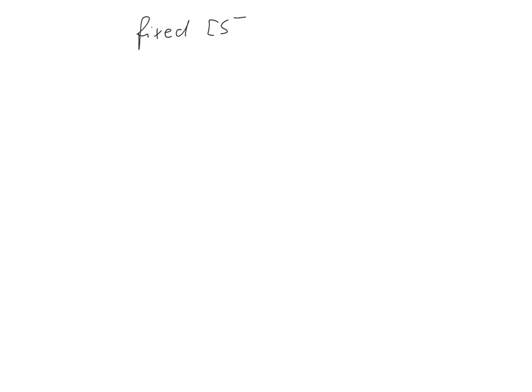But it's actually not such a huge problem. What we do is have a fixed substrate concentration — and this always has to be the same concentration. We can measure the rate at that substrate concentration, then add inhibitor and get an observed rate, and so on and so forth.